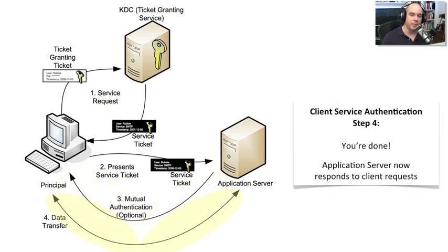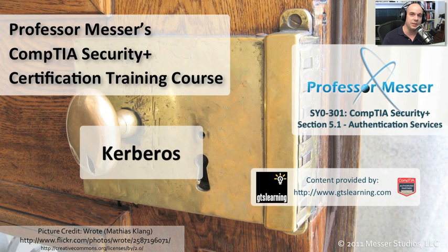After exchanging all this encrypted information, we are now communicating directly with the application server, which grants us access to those resources. This Kerberos process takes place every time we need to authenticate to the network for the first time and every time we need access to another resource. In a Microsoft Windows Active Directory infrastructure, the security logs will show extensive session information from people authenticating into Kerberos. This technology allows authentication and access regardless of where you are on the network or what operating system you're using.